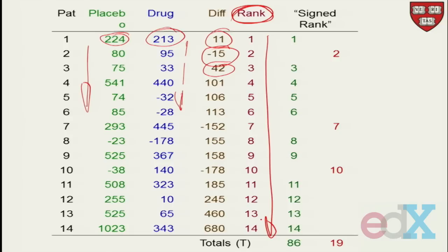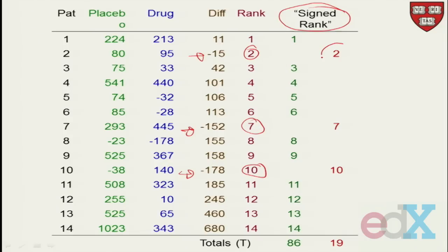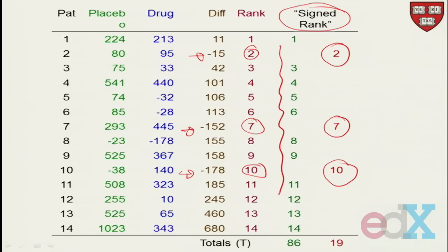Ignore the sign — so 11 is smaller than 15, even though it's minus 15. Operationally, you ignore the sign of the difference and just rank them. So this negative one is ranked 7, and this one is ranked 2. Then reverse your process: look at the signed rank — look at all the ranks associated with negative numbers. There are three of them: 2, 7, and 10. Then look at the ranks associated with positive differences.